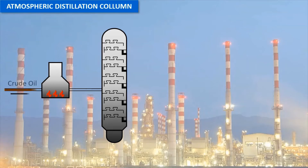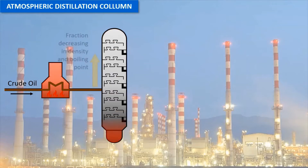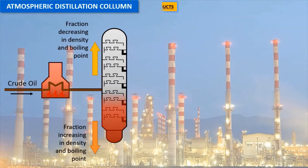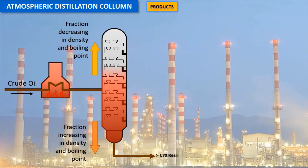A crude oil refinery is a group of industrial facilities that turns crude oil and other inputs into finished petroleum products. The atmospheric distillation column is an essential item used in the distillation of crude oil to separate the mixture of hydrocarbons into its component parts or fractions based on differences in volatilities.